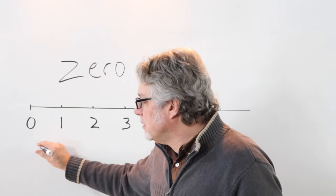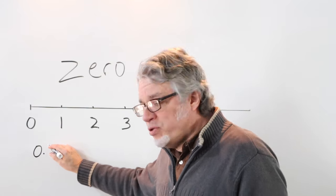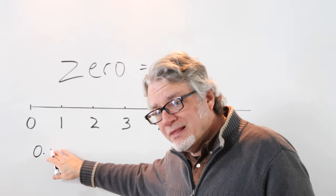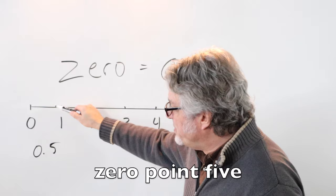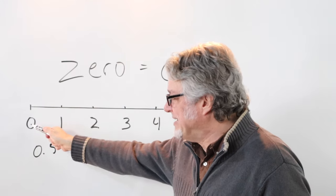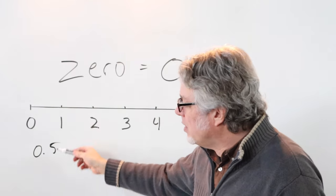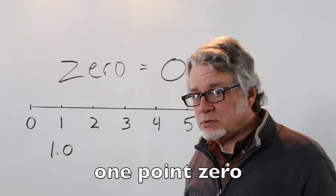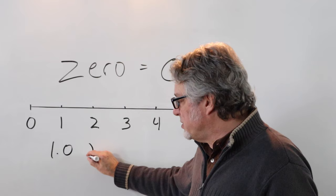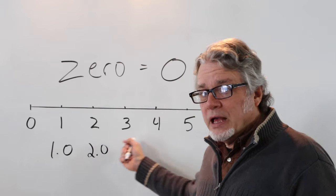Before one, zero point, and then you can have a number here, zero point five. That would be about halfway between zero and one. One is one point zero. Two is two point zero, and so on.